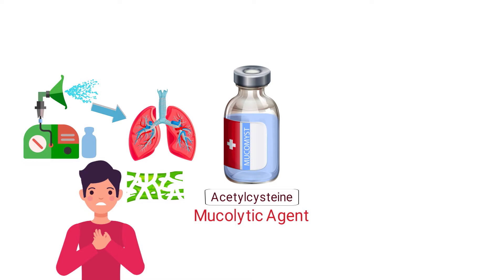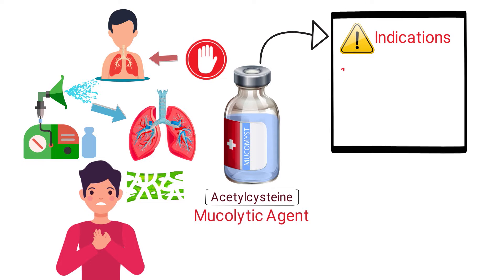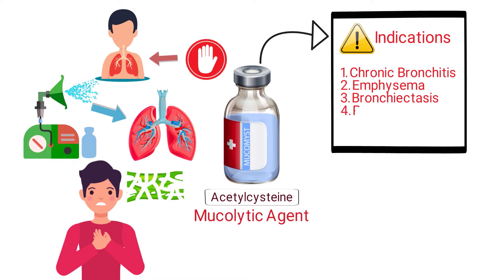Mucomist is most commonly administered to treat or prevent mucus buildup in patients with lung diseases. It is most often indicated for the treatment or prevention of mucus buildup in the following respiratory conditions: chronic bronchitis, emphysema, bronchiectasis, pneumonia, cystic fibrosis, and atelectasis that is due to a mucus obstruction.